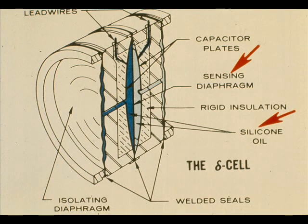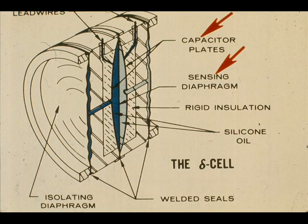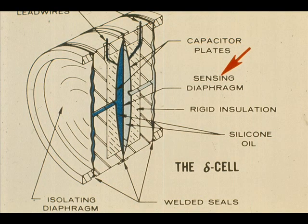A change in differential pressure across the isolating diaphragms is transmitted through the silicon oil to the sensing diaphragm. This changes the position of the sensing diaphragm in relation to the capacitor plates, which in turn changes the capacitance between the sensor and the plates. The movement of the sensing diaphragm and the resulting differential capacitance is proportional to the differential pressure.